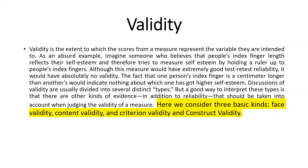That means Cronbach's alpha might be very good, and test-retest reliability — meaning the consistency of responses given today and after 15 days — may be the same. So reliability is very good, but that method is not valid. The fact that one person's index finger is a centimeter longer than another tells us nothing about which one has higher self-esteem. Types of validity evidence include reliability and other kinds of evidence that should be considered when judging the validity of a measure.